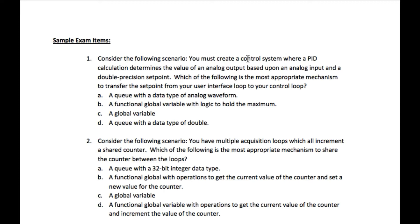Question number one says consider the following scenario: You must create a control system where a PID calculation determines the value of an analog output based upon an analog input and a double precision setpoint. Which of the following is the most appropriate mechanism to transfer the setpoint from your user interface loop to your control loop? In this case you are asked to send a double precision setpoint data from one loop to another.